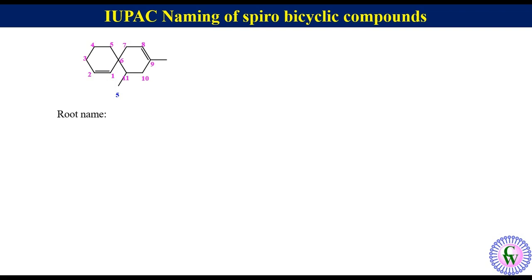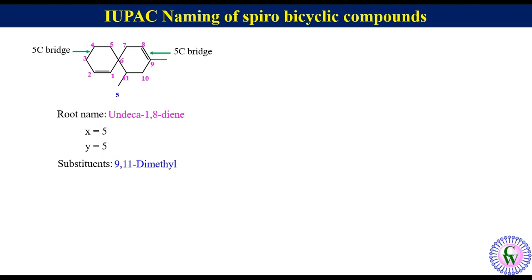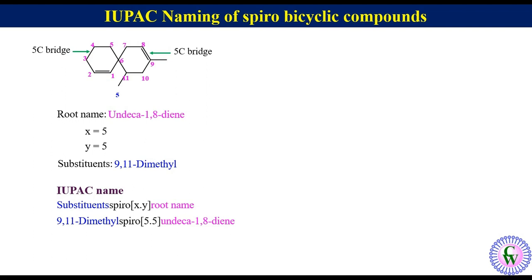Root name: there are 11 carbon atoms in the ring with 2 double bonds at C1 and C8, so the root name will be undeca-1,8-diene. There are two 5-carbon bridges, so x = 5 and y = 5. Substituents: there are 2 methyl groups at C9 and C11, written as 9,11-dimethyl. IUPAC name: 9,11-dimethylspiro[5.5]undeca-1,8-diene.